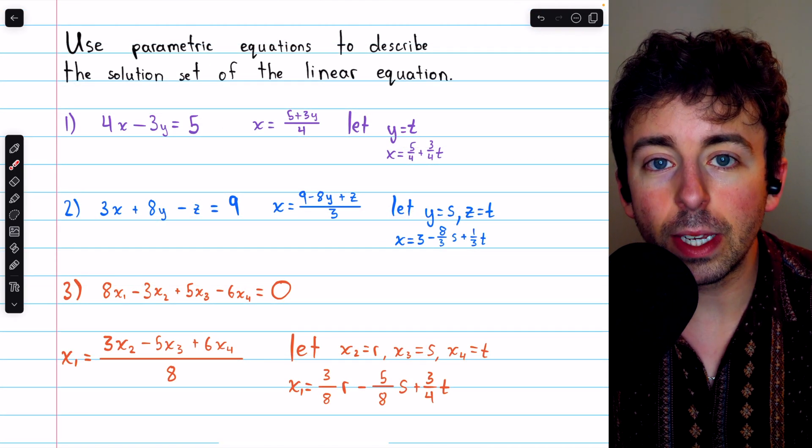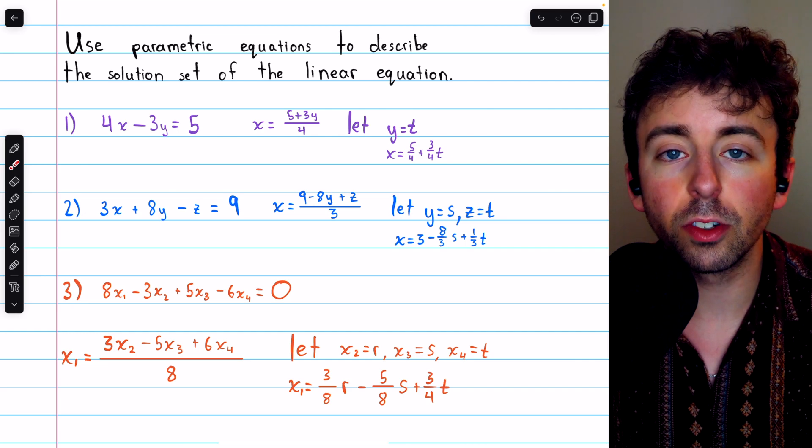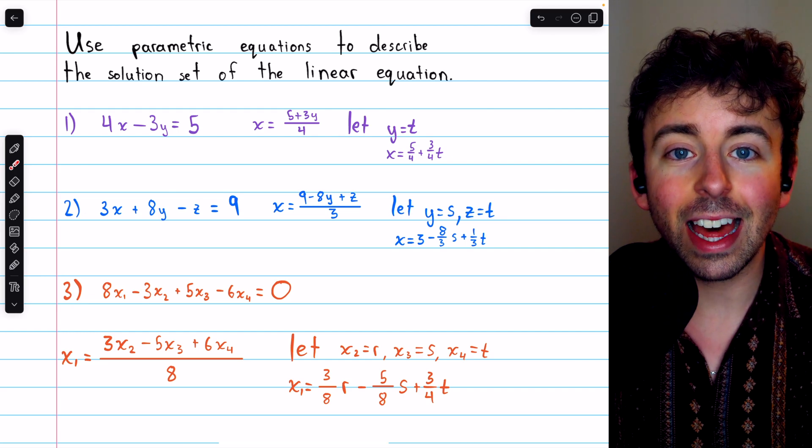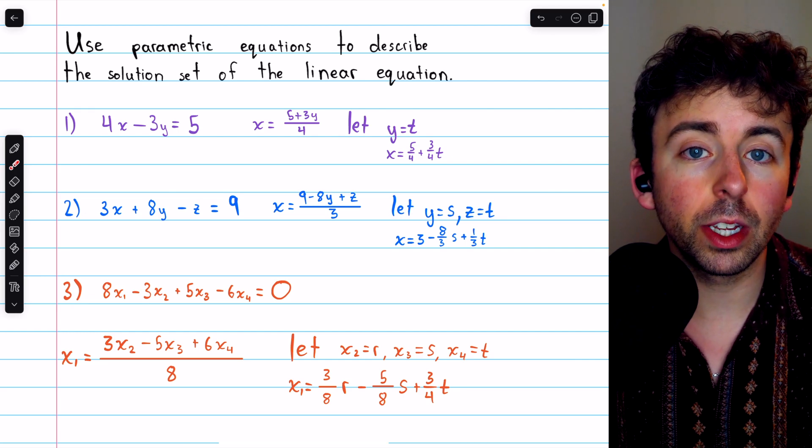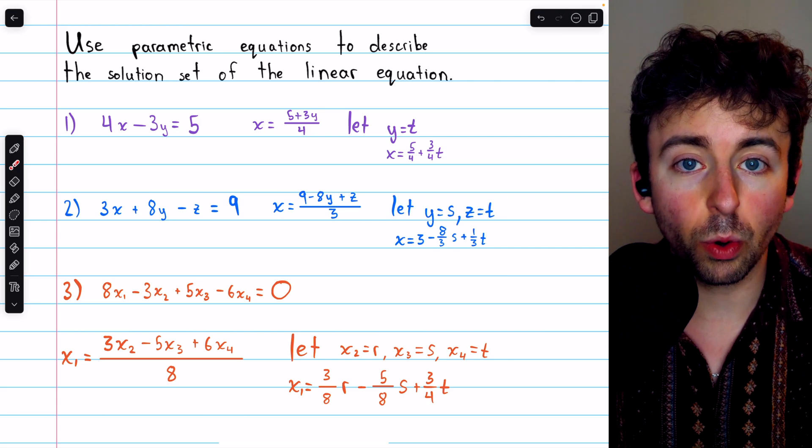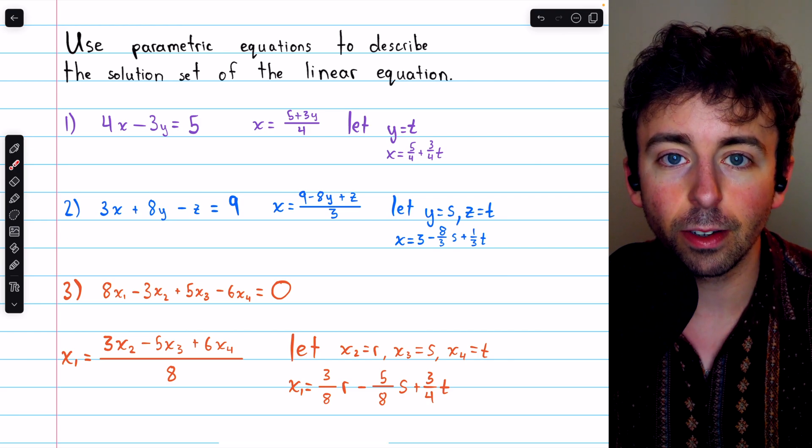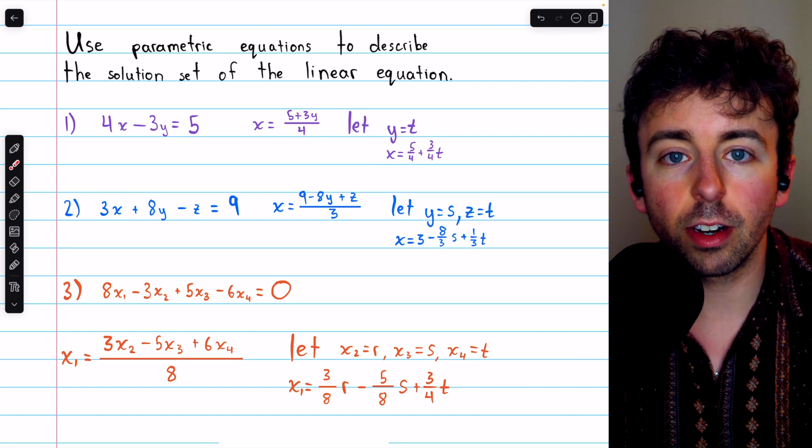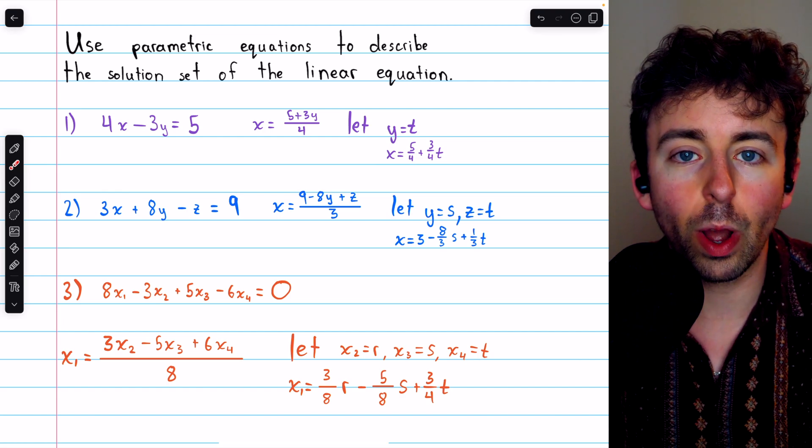Note that in all of these cases, because we assign one of the variables to an arbitrary parameter, that variable can take on infinitely many values, and so these equations have infinitely many solutions. So that's how to use parametric equations to describe the solutions of a linear equation.